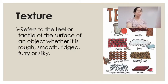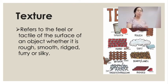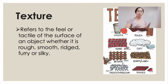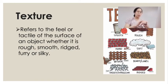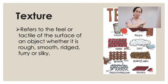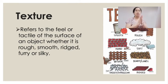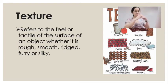We go to another element, which is texture. Texture refers to the feel or the tactile quality of the surface of an object — whether it is rough, smooth, ridged, furry, or silky. When you touch your hands or feel the table, you are sensing texture. Even the texture of a mask — whether you are allergic to it or not — that's part of texture. That is how you determine texture.